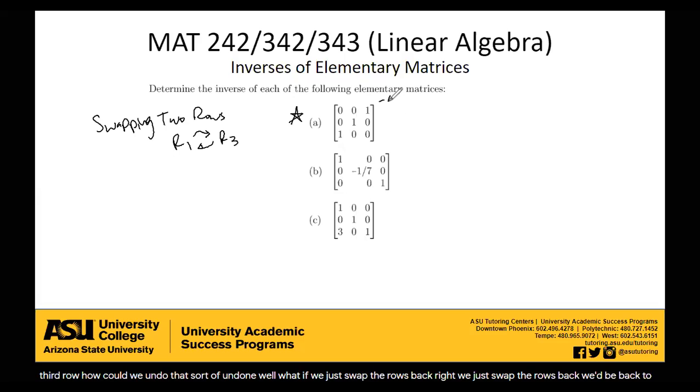So in fact, the inverse of this matrix is itself. Because this is the matrix that swaps the first and third row. So if I swap the first third row, and then I do that again, I'm back to where I started. And that's what inverses are. They undo each other. So in general, if you have an elementary matrix that swaps two rows, the inverse of it is itself. Well, that's cool. Let's go to the next example.